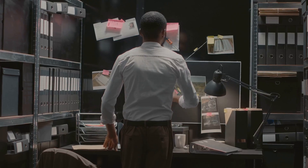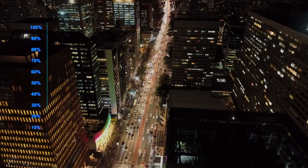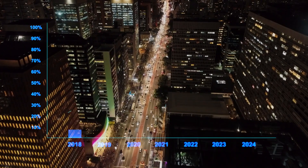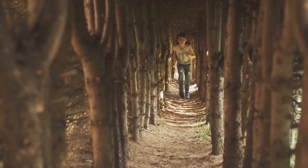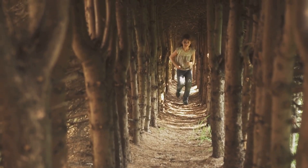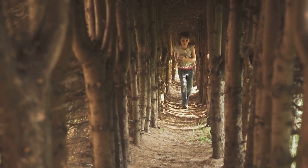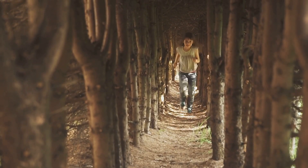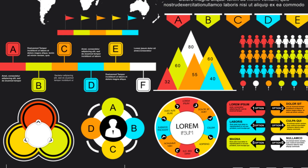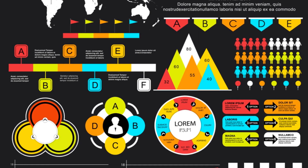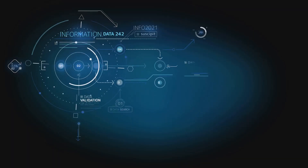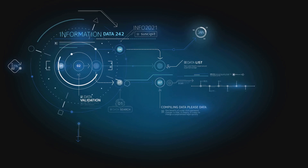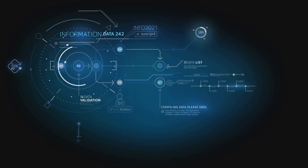Imagine you're a detective. Your main job is to collect clues, right? In the world of statistics, these clues are called data. These pieces of information help us solve mysteries, answer questions, and uncover patterns. But here's the thing: not all data are the same. They come in different types, each with its unique way of helping us understand the world.